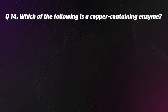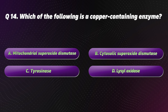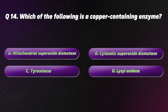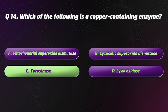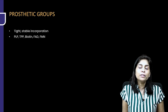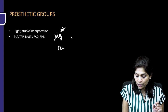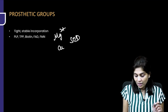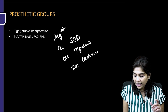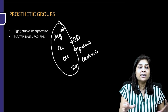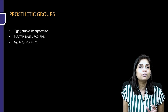Question 14. Which of the following is a copper-containing enzyme? Options: A. Mitochondrial superoxide dismutase, B. Cytosolic superoxide dismutase, C. Tyrosinase, D. Lysyl oxidase. The correct option is C, Tyrosinase. Most minerals act as prosthetic groups — magnesium in kinases, copper in superoxide dismutase and tyrosinase, zinc in carbonic anhydrase. These non-protein parts cannot be detached from the protein part.